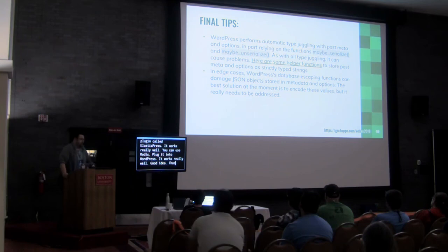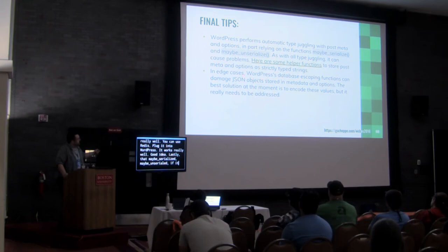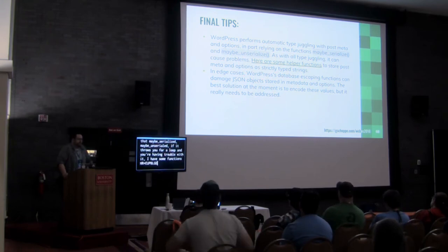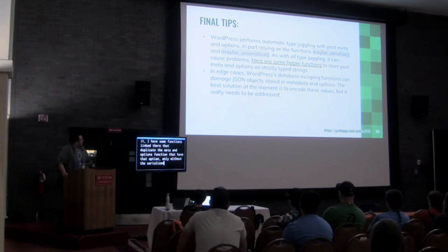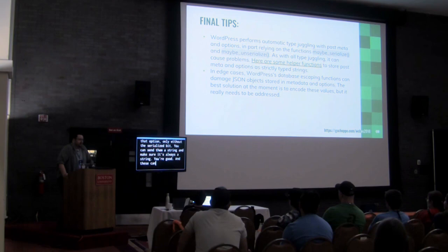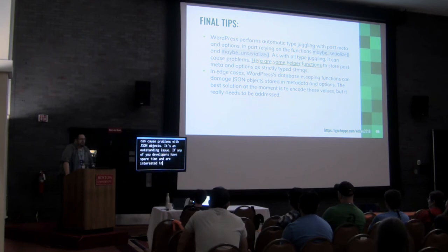Last bits — `maybe_serialize` and `maybe_unserialize` can really throw you if you're having trouble with them. I've got some functions linked in the slides that duplicate the original meta and options functions but without the serialization issue — just send them strings and you're good. The escaping functions can also cause problems through JSON objects — I wish I had a magic bullet for that. That is an outstanding issue in WordPress core, and if any of you developers have spare time and are interested in working on it, do it. Best thing about WordPress is we can contribute and commit improvements.